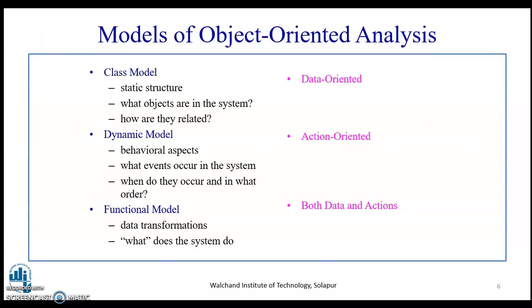The models of object-oriented analysis are the class model, dynamic model, and functional model. The class model covers the data-oriented aspect of modeling. Dynamic modeling covers the action-oriented, behavioral aspects. The functional model includes both data and action.